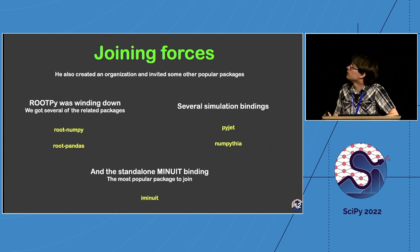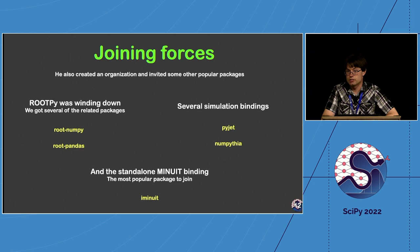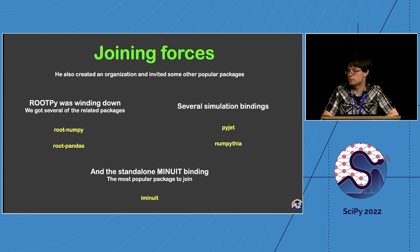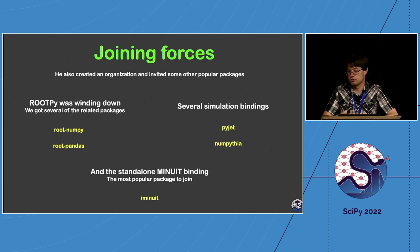The scikit-hep package was placed inside a scikit-hep organization, and we started inviting other projects doing well in Python to join. Root-numpy and root-pandas came over from the root-py project — a third-party package (not the official PyROOT bindings) whose original author was moving on. We also got simulation packages PyJet and Pythia as bindings. Possibly the most popular package to join was iMinuit, a popular binding to the Minuit fitting package, which is quite popular in astronomy as well.